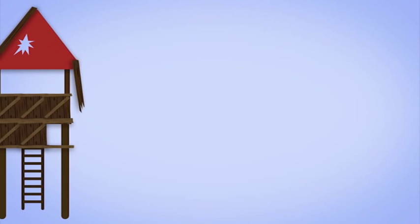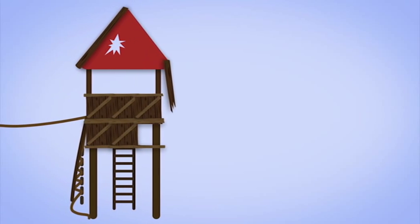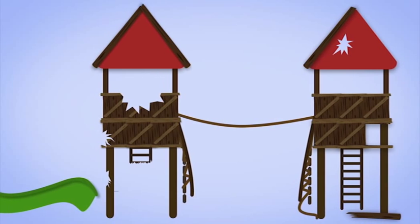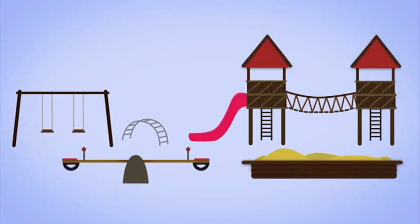You can easily tell whether the playground equipment is in good shape. Make sure there are no rotten or crumbling wooden parts and no sharp edges. Nails and splinters can also injure children.